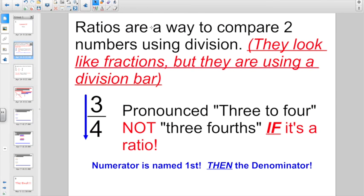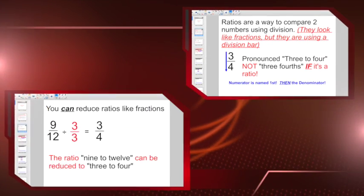Ratios are a way to compare two numbers using division. They look like fractions, but they're essentially using a division bar. And when you take a look at a ratio here, this would be pronounced three to four, not three-fourths if it's a ratio. And you're going to name the numerator first, then the denominator. Three to four. And when we start setting up ratios and story problems, the number you name first is going to become very important.